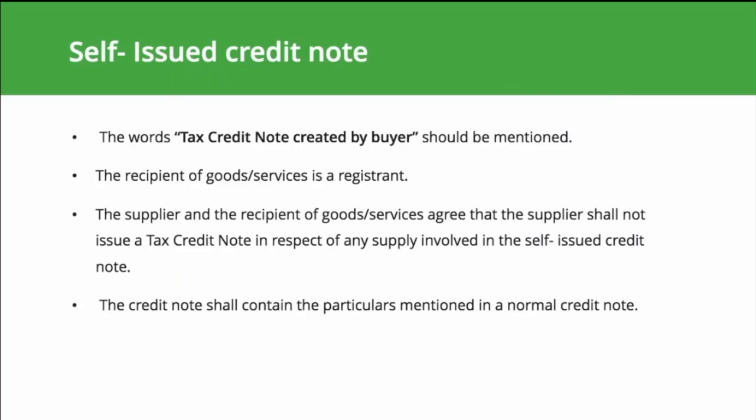Just like self-built invoices, credit notes can be issued by the recipient on behalf of the supplier, provided: the words 'tax credit note created by buyer' are displayed; the recipient is VAT registered; the supplier and recipient agree that the supplier will not issue a tax credit note for any supply under the self-issued credit note; and the credit note contains all the transaction details required in a normal credit note.